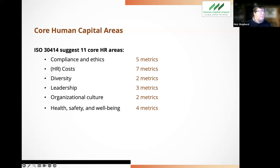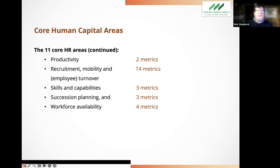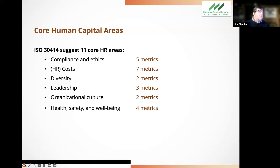The fourth category is leadership — measuring very important issues like trust, span of control, and leadership development. The fifth is organizational culture, with measures mainly around employee engagement, satisfaction and commitment, as well as retention rate, which is another critical area. The sixth is health, safety, and well-being — very much aligned with and consistent with health and safety reporting already required in many jurisdictions, and consistent with areas like ISO 45001, which is focused around the health and safety area.